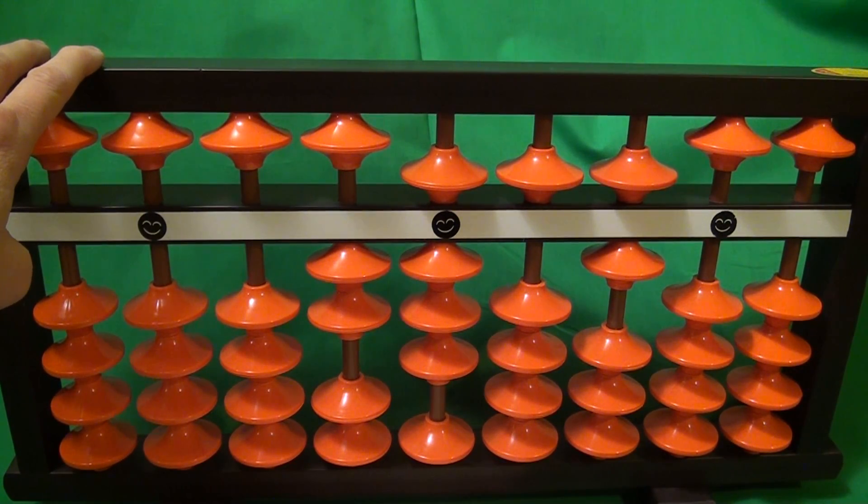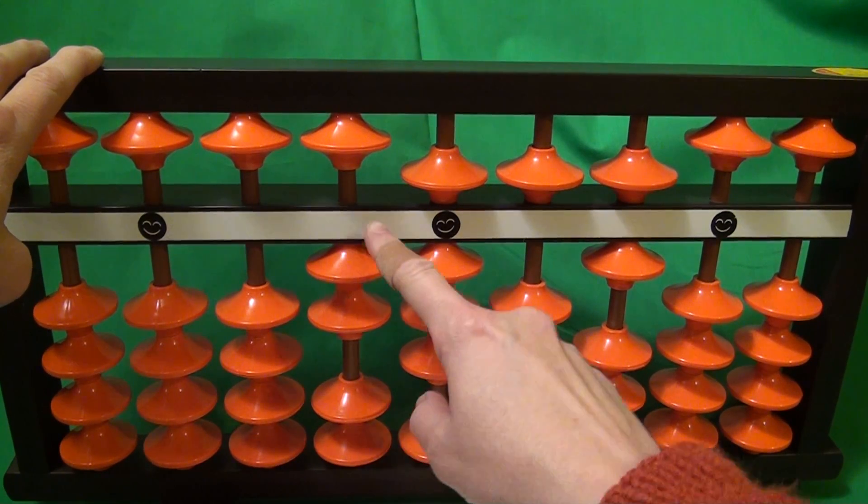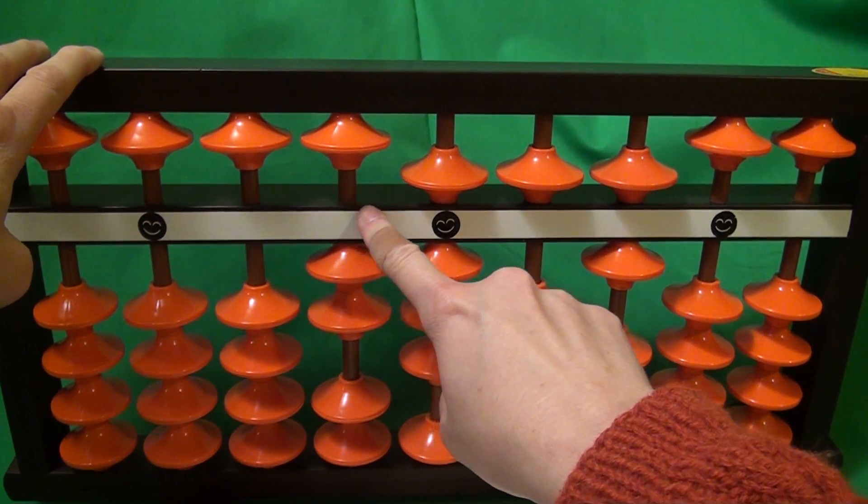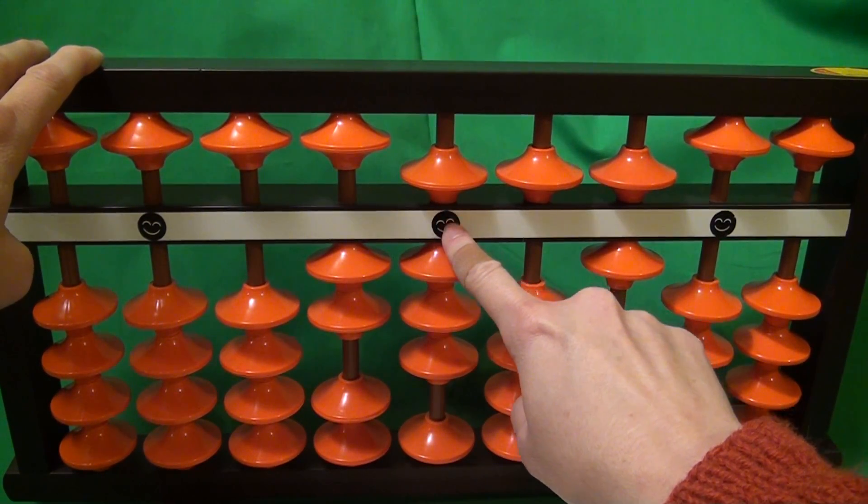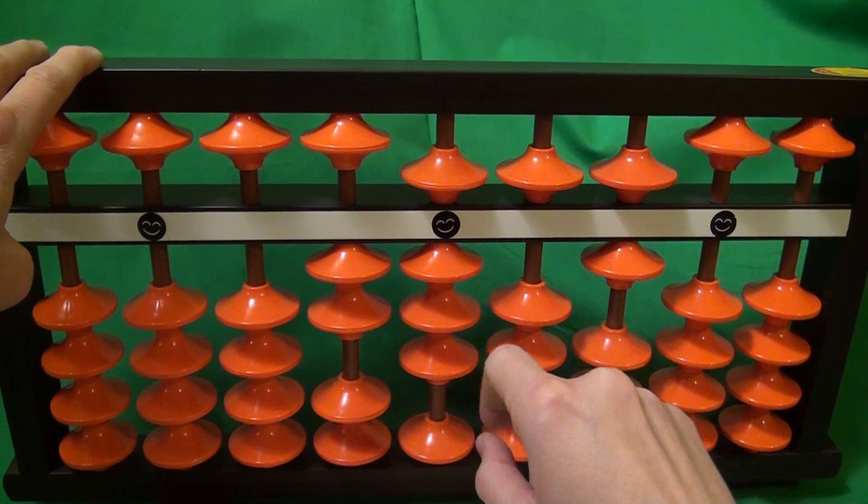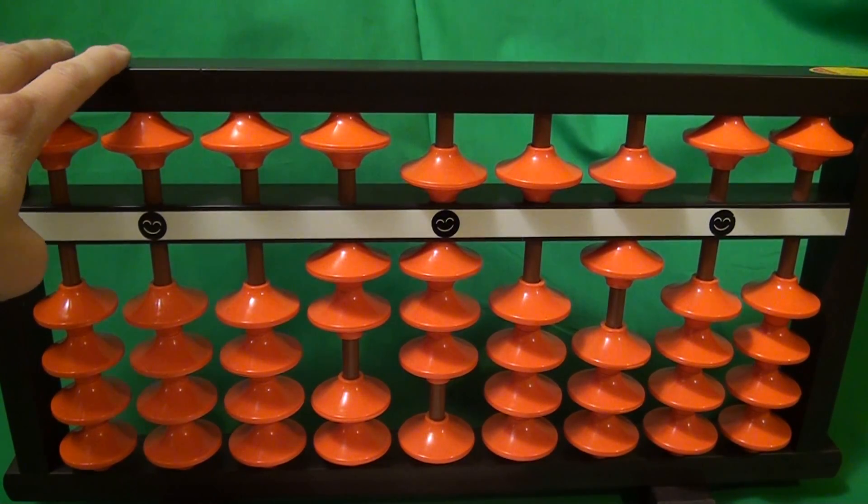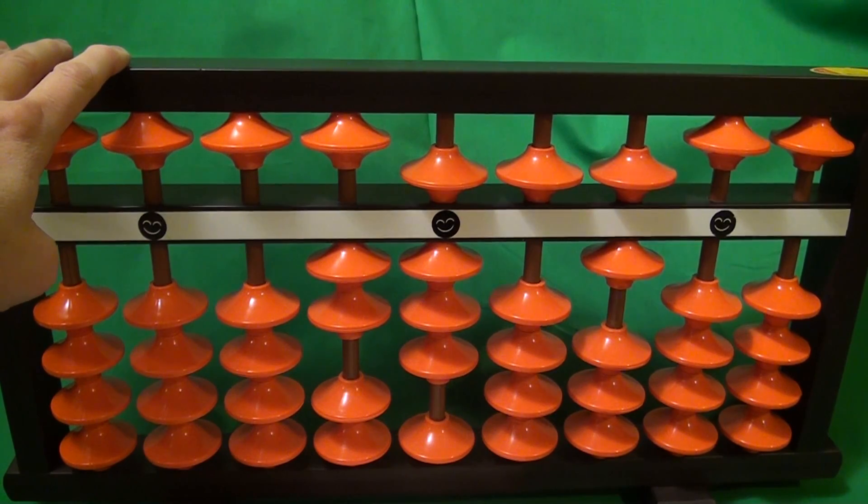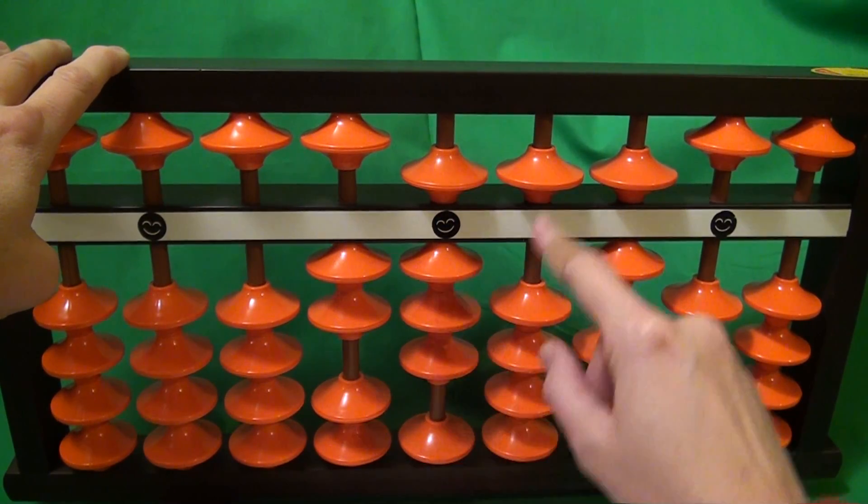Now we have to multiply by 2. Now remember, we started here with multiplying by 8. Now we move to here. And we start here with multiplying by 2. So we have 3 times 2. 3 times 2 is 6. So 0. Do nothing. And 6.